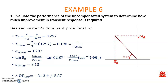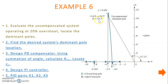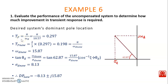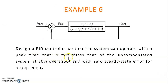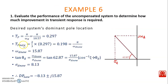From the dominant pole using gain K equal to 121.5, the peak time of the uncompensated system is 0.297 seconds. Since the design requires the new peak time to be two-thirds of that, we calculate the new peak time as two-thirds of 0.297. From this, we determine the new omega_D, and using the damping ratio to find theta_D, we determine the new sigma_D. The new dominant pole values are minus 8.13 plus j15.87.